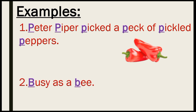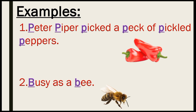Next, we have 'Busy as a Busy Bee.' Here, the 'B' sound is repeated. There is an initial consonant sound that repeats. The initial sound is the first sound we produce when we say any word — we call it the initial sound.